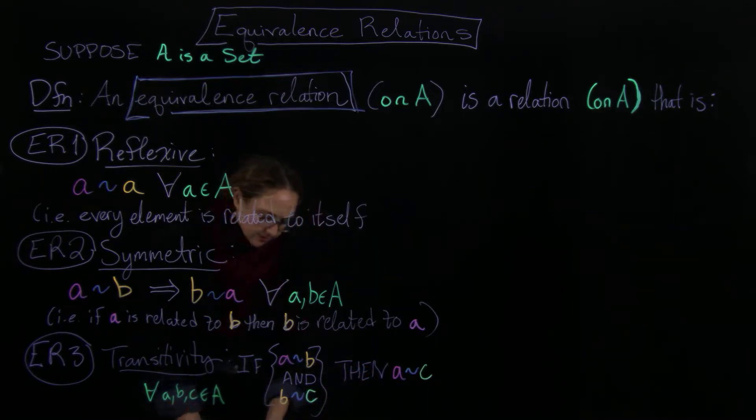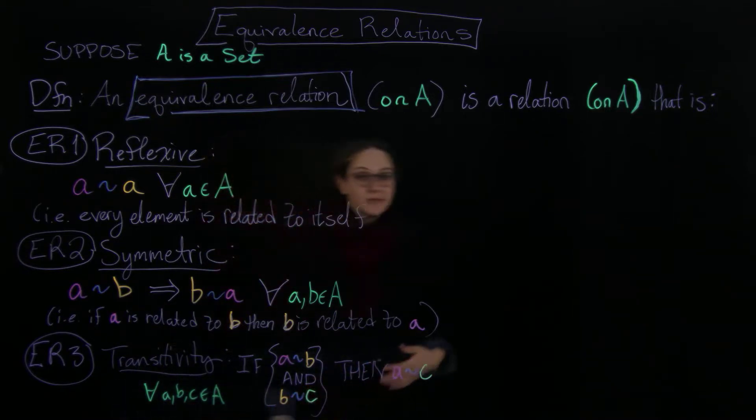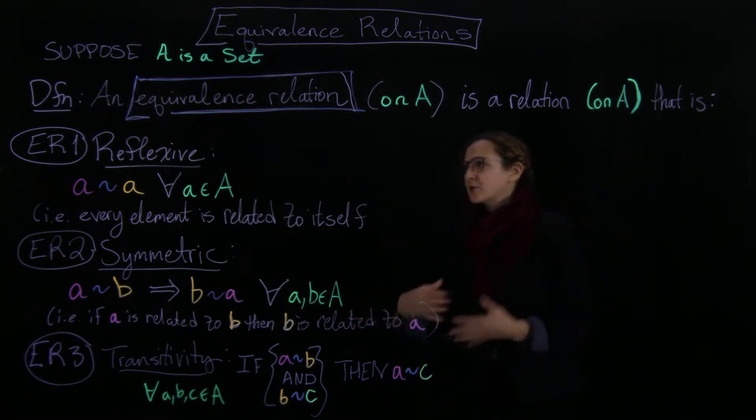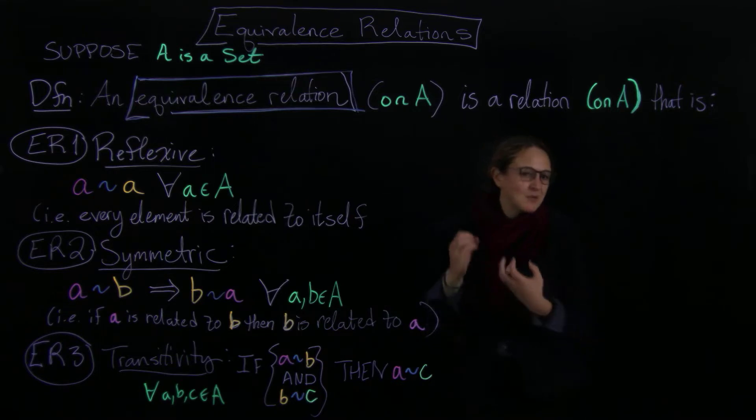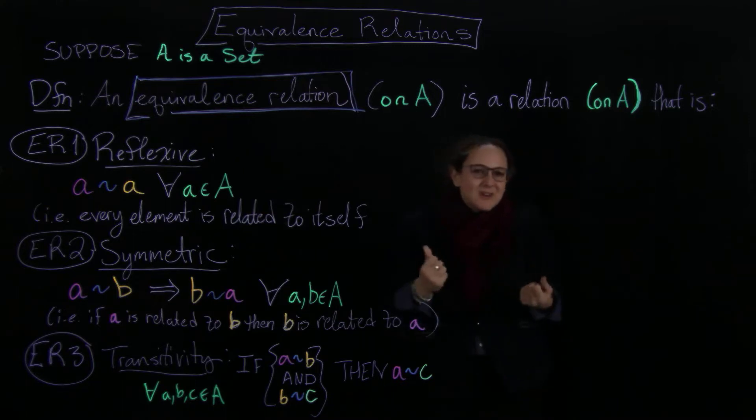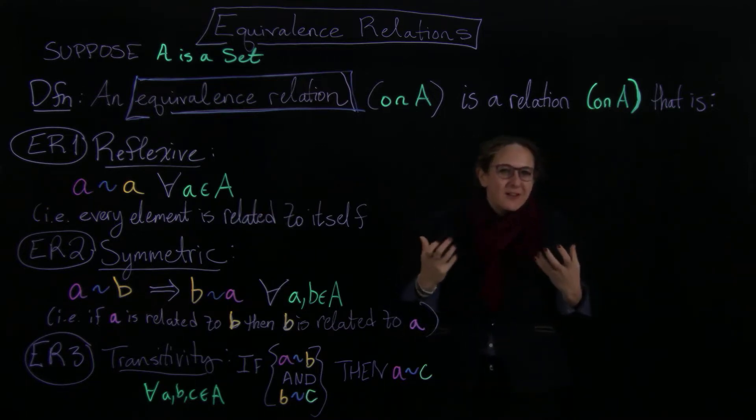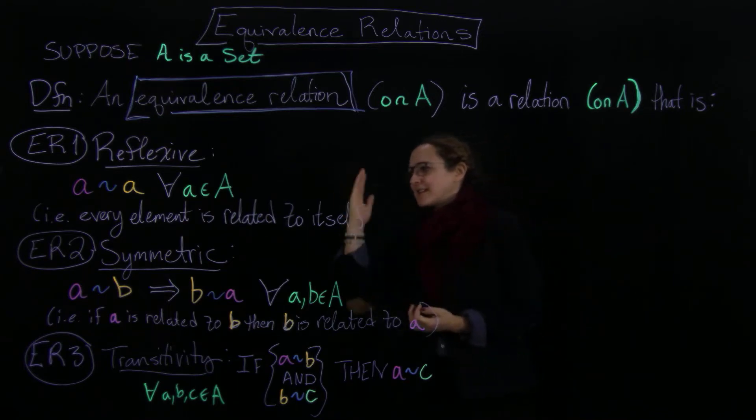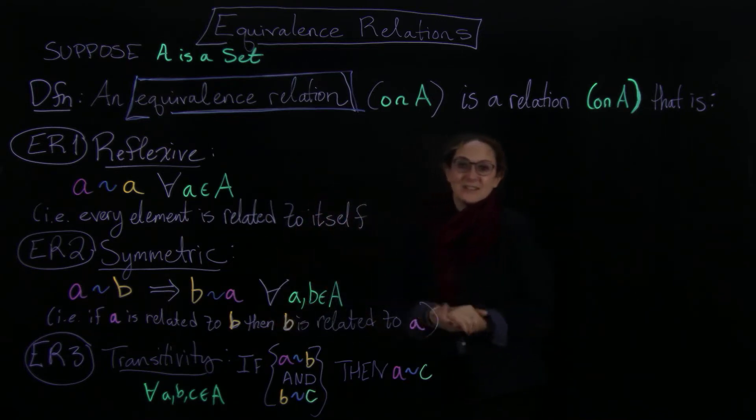So an equivalence relation, this is incredibly ubiquitous in mathematics, is a way of saying, so it's a particular kind of relation. It's a way of saying what we're going to consider to be equal. This is going to show up a lot. And so we decided what are the properties of equality that we really want to capture. And they're reflexivity, symmetry, and transitivity.